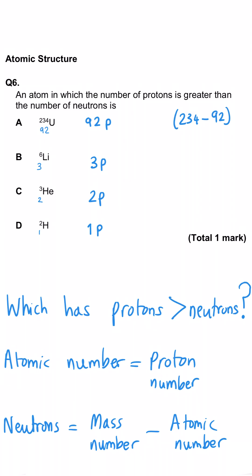So 234 minus 92 gives us 142 neutrons, very definitely bigger than 92. For lithium, 6 minus 3 is 3, so our protons and neutrons are the same.